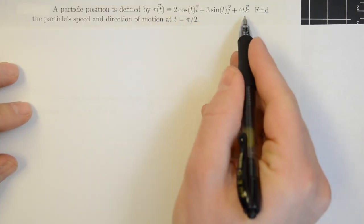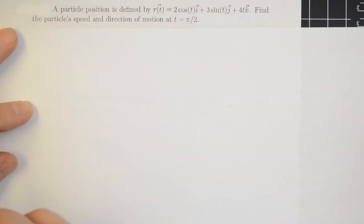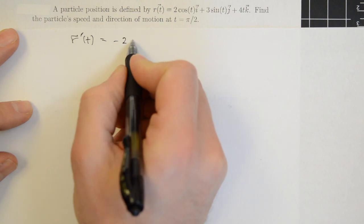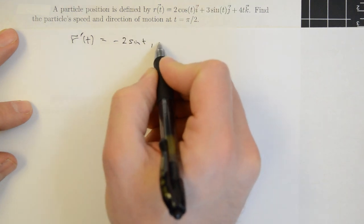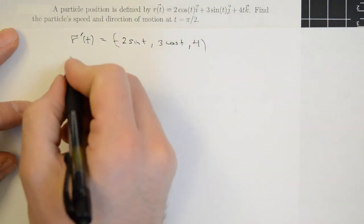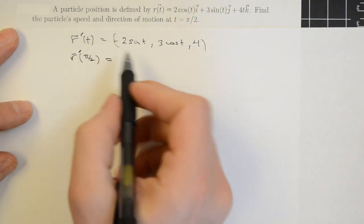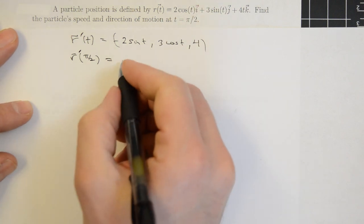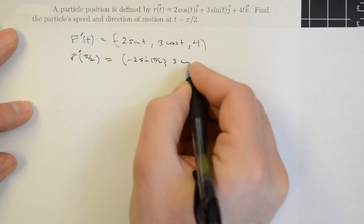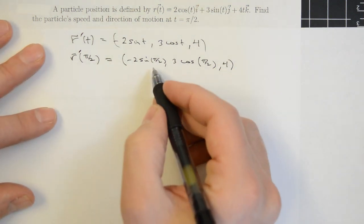Continuing with the same position function, we're asked to find the particle's speed and direction of motion at t equals π/2. We recall that the velocity vector function r′(t) is minus 2 sine t in the i-component, 3 cosine t in the j-component, and 4 in the k-component. Evaluating this at t = π/2 gives the vector minus 2 sine(π/2), 3 cosine(π/2), and 4.